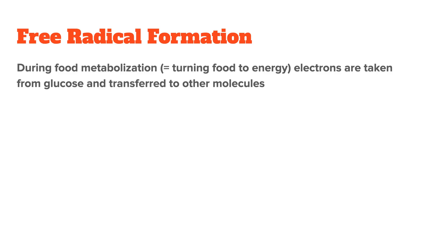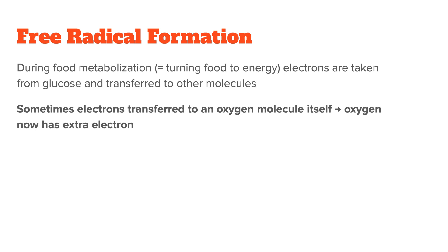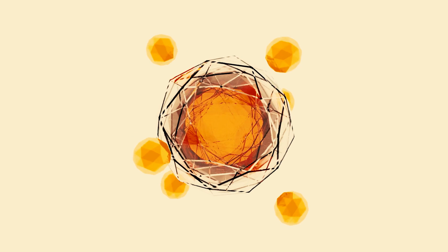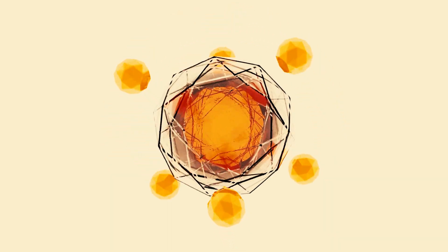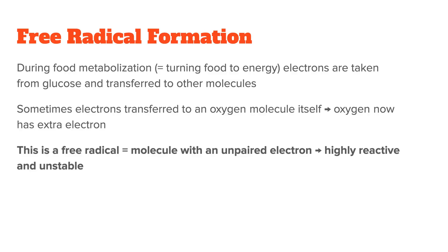What you have to know here is that oxygen is a double-edged sword. It is critical to life, but it is also very reactive. And this is where free radicals come into play. In the process of metabolizing food — so turning food into energy — electrons are taken from the glucose molecule and then transferred to other molecules. Sometimes these electrons are actually transferred to the oxygen itself, meaning the oxygen in your body now has an additional electron. And this is a free radical.